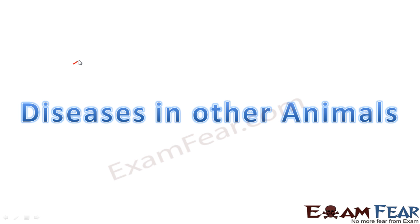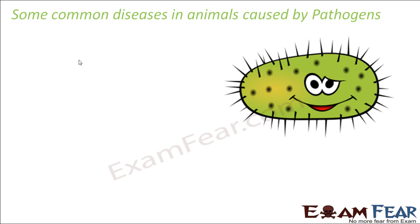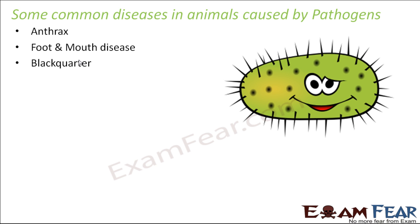Now let us look at the diseases which are caused in animals, other than human beings, by these pathogens. Some of the common diseases in animals caused by pathogens are anthrax, foot and mouth disease, and black quarter. Let us talk about anthrax first.